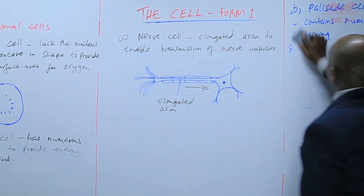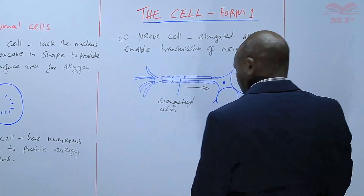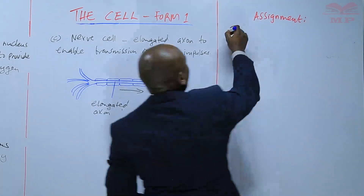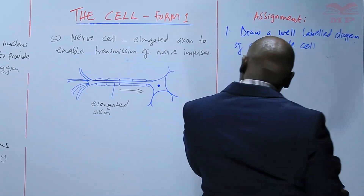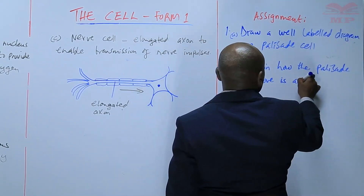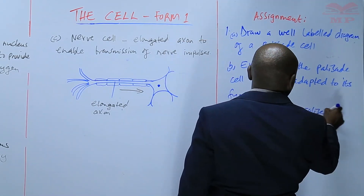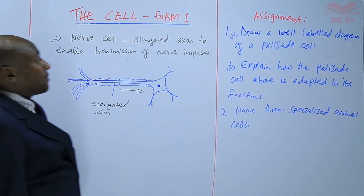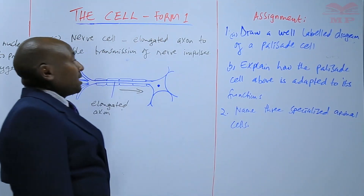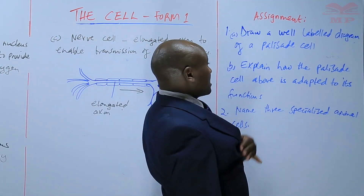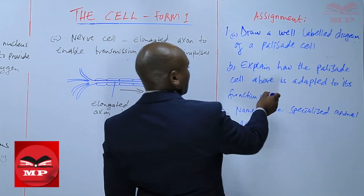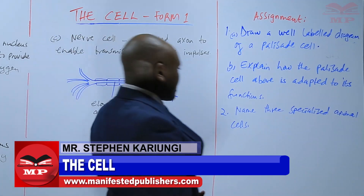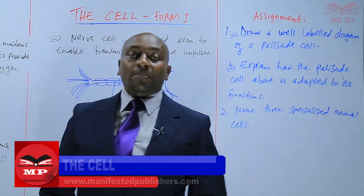An assignment: Question one — draw a well-labeled diagram of a palisade cell, and explain how the palisade cell is adapted to its functions. Question two — name three specialized animal cells. We'll stop there until next time. Goodbye.